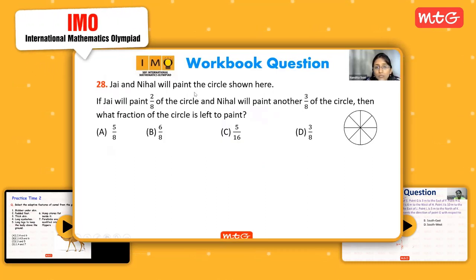Okay, let's see. Jai and Nihal will paint the circle shown here. If Jai will paint 2/8 of the circle and Nihal will paint another 3/8 of the circle, then what fraction of the circle is left to paint? So see, Jai, if I denote it by green color, he is painting 2/8. That means how many parts should I color? Vishwesh, tell me how many parts will I shade if I have to represent 2/8? Two parts, okay.